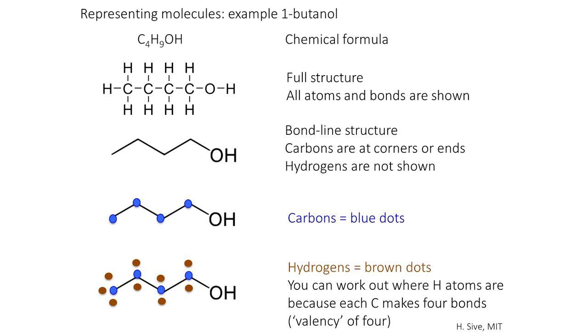And so there's a shorthand that we use. And this is the bond line structure shown, where you can see that instead of the carbons, there is a broken line. There is a zigzag line. And the carbons are at the corners, or at the ends of every line.